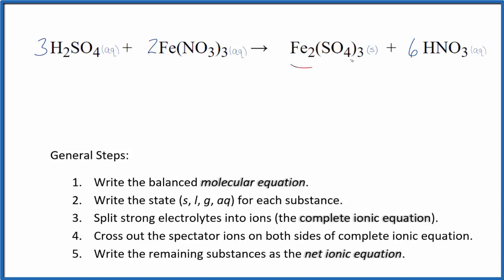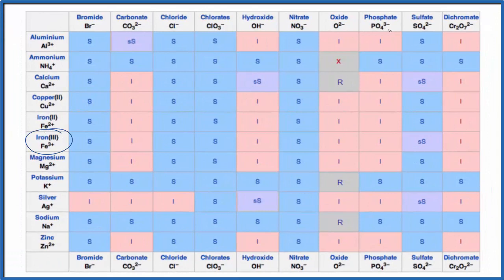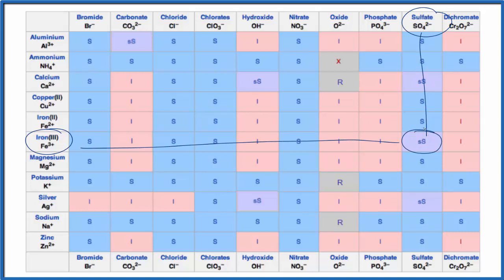This Fe2(SO4)3 is a bit more problematic. If we look at this solubility chart, we find iron(III) and sulfate. Going down and across, this table tells us it's slightly soluble. A little bit will dissolve, but not a lot. For the purpose of net ionic equations, we consider that to mean it's going to be a precipitate. That's why we have the S after Fe2(SO4)3.